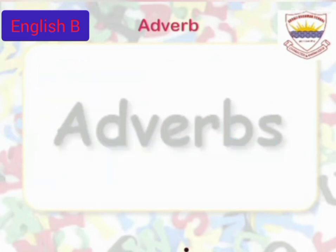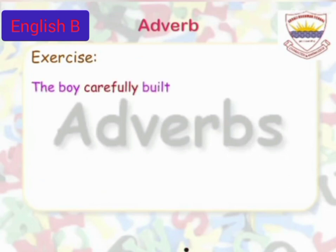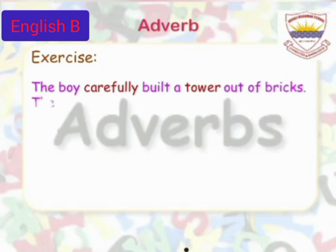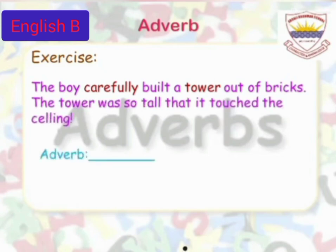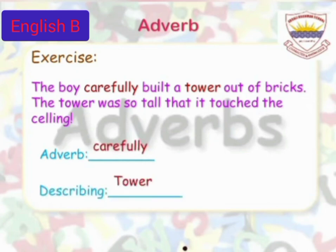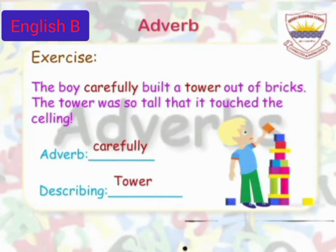Let's solve some exercises to know how much we have understood the concept of adverb. The boy carefully built a tower out of bricks. The tower was so tall that it touched the ceiling. Can you identify the adverb in this sentence? Here the adverb is carefully, which describes the verb built. Look at the picture — a boy is building a tower.